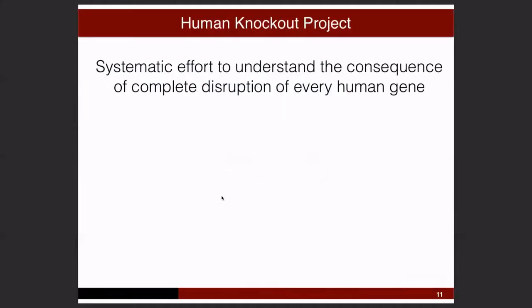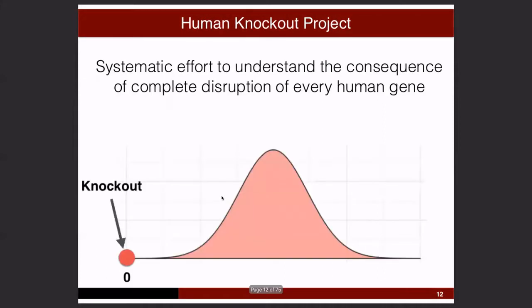A human knockout project is the systematic effort to understand the consequence of complete disruption of every human gene. I like to think of it as a continuum of gene function, where knockouts are at the extreme — zero functional copies. But these are just a handful of people for any given gene, and the majority of people fall elsewhere. So why waste all that information?